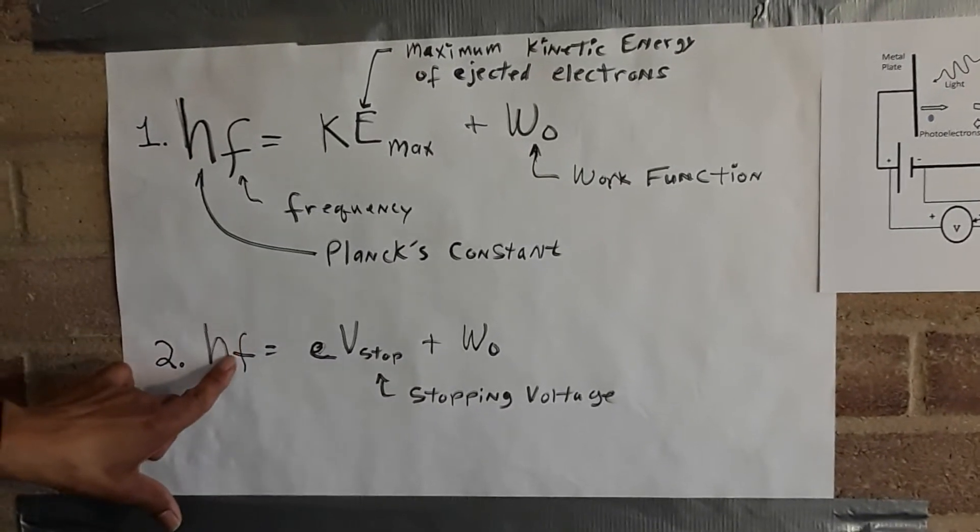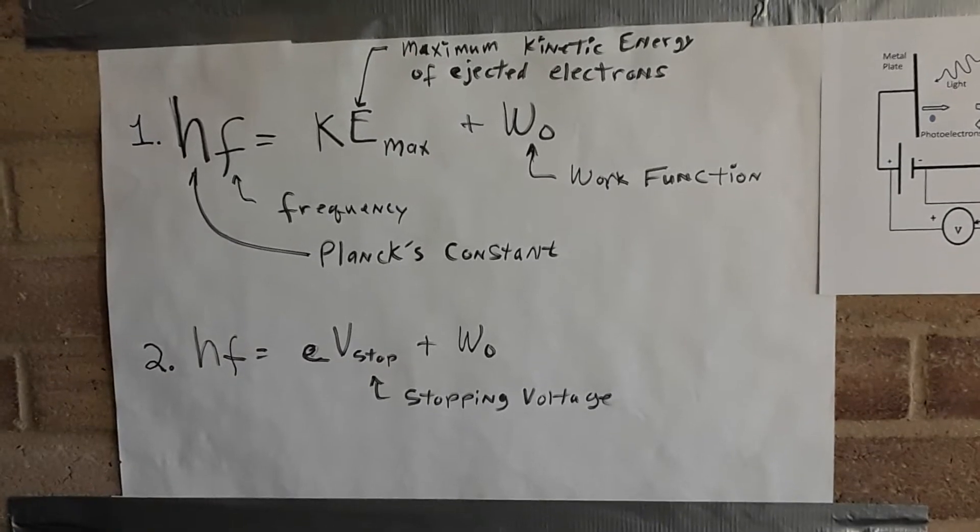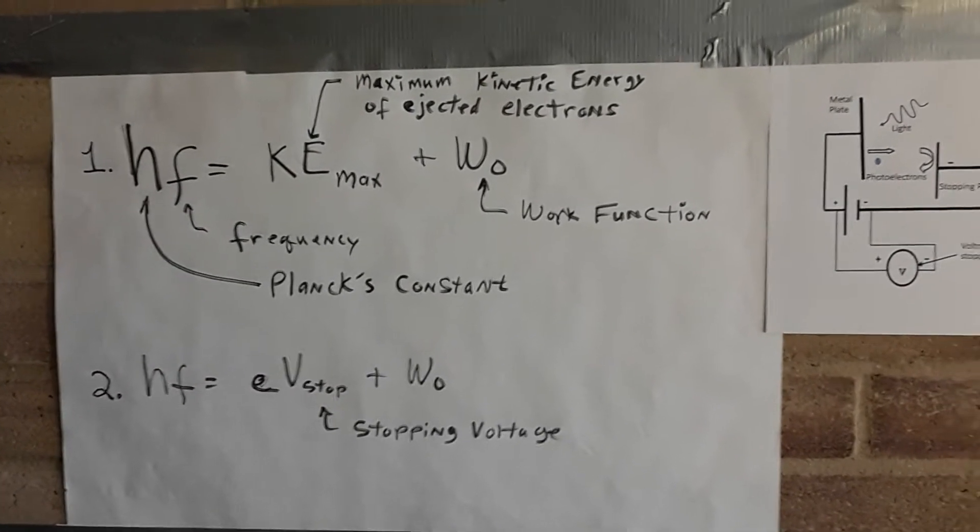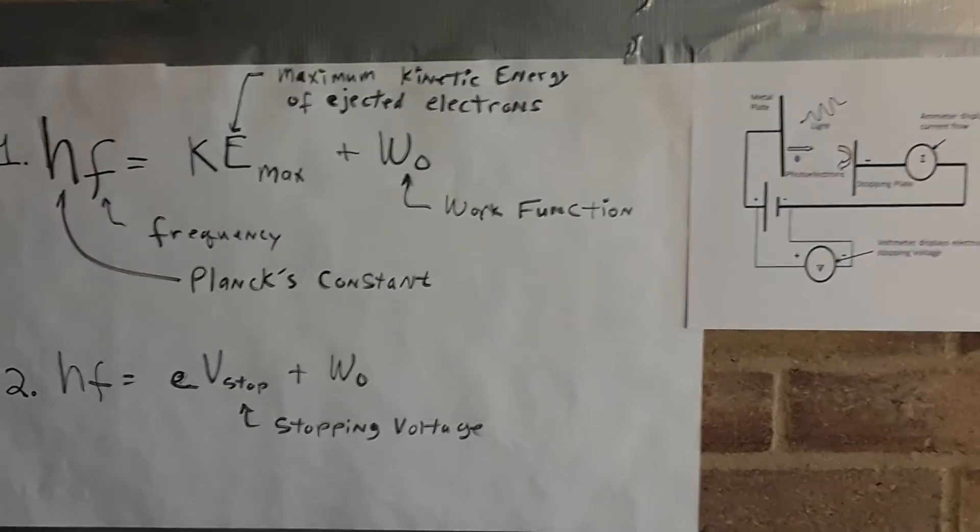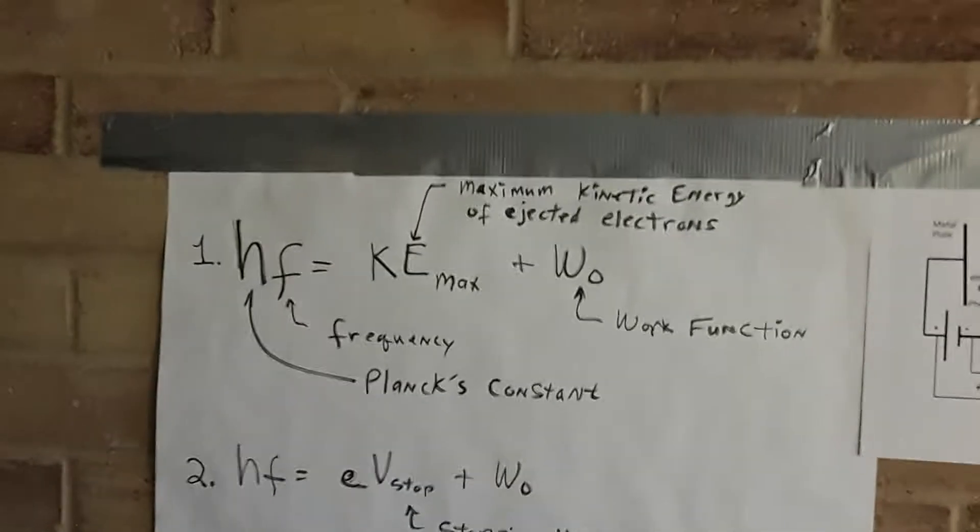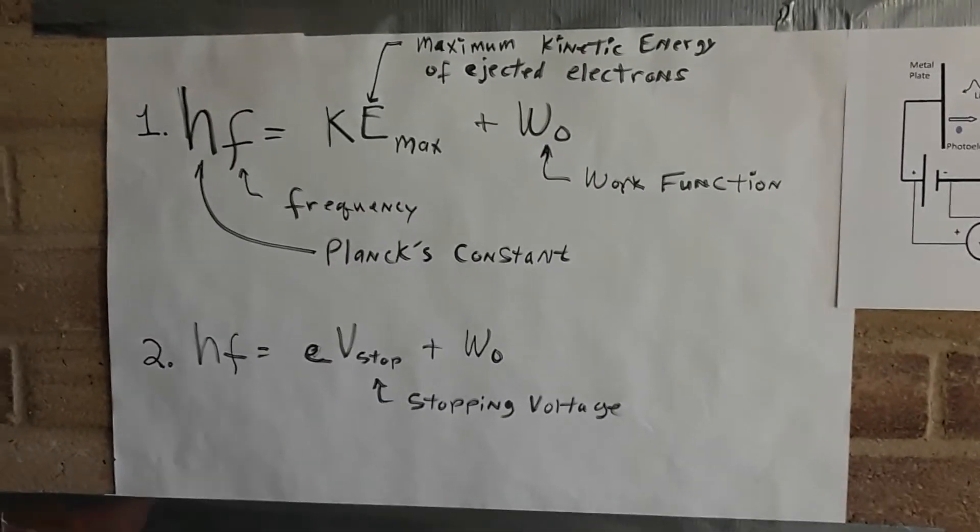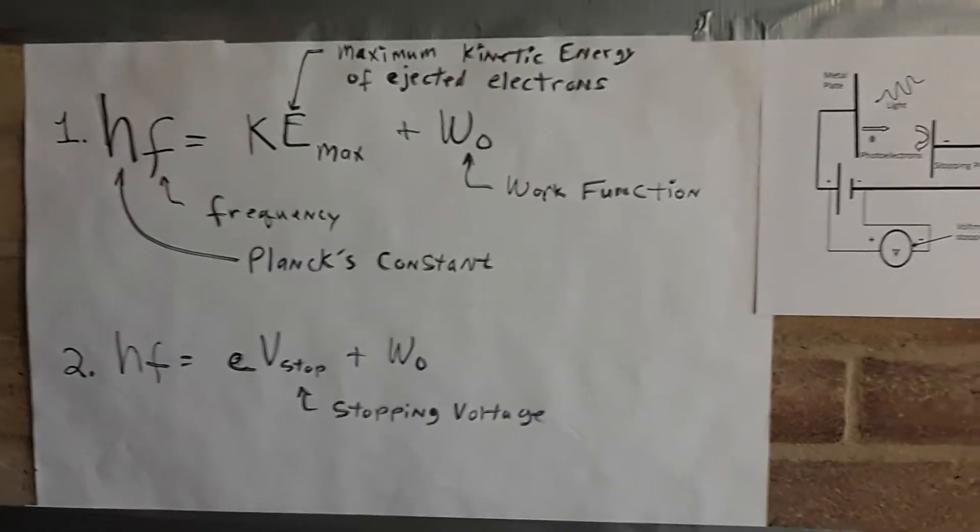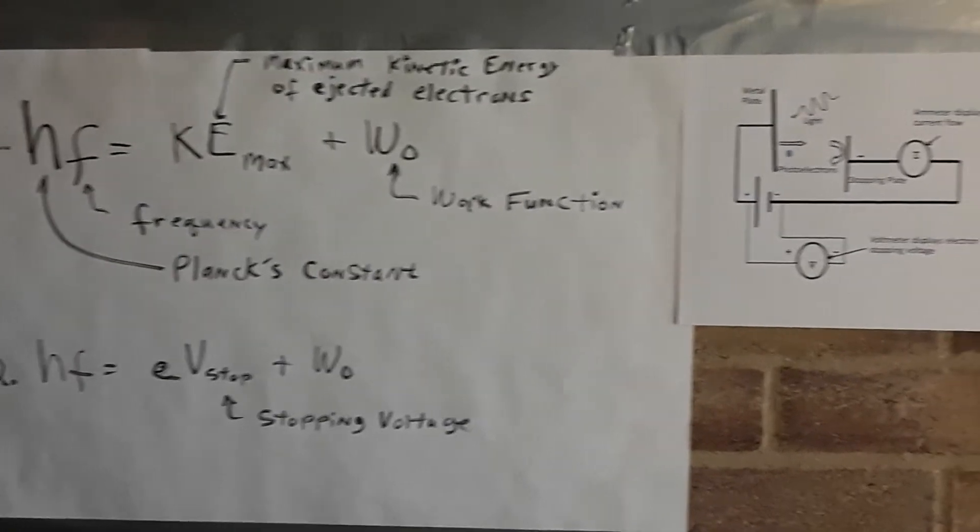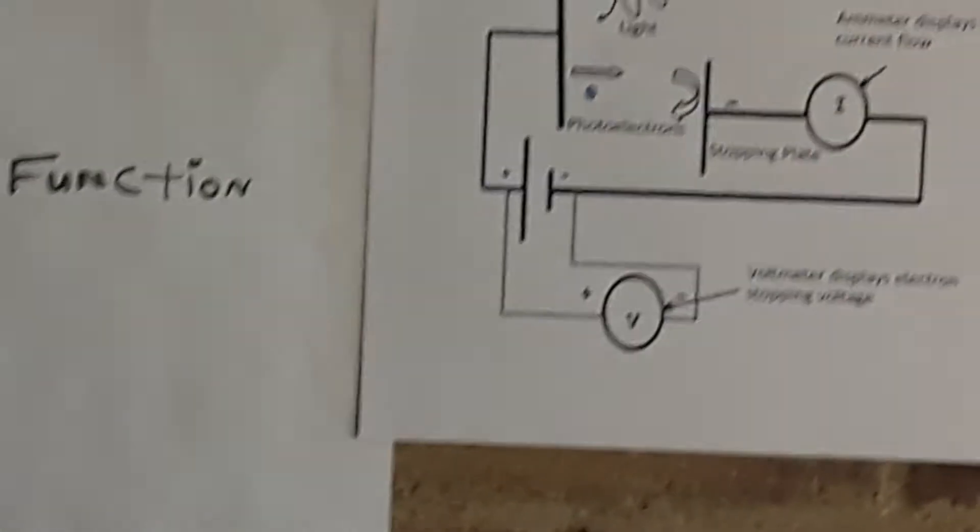That says that the higher the frequency, the higher the stopping voltage. And that's what this lab is going to demonstrate. We're going to use three filters: red, green, and blue. And the idea is as we go to higher frequency filters that only allow those photons to go through and interact with the metal plate, it should take a higher stopping voltage to stop the current from flowing.